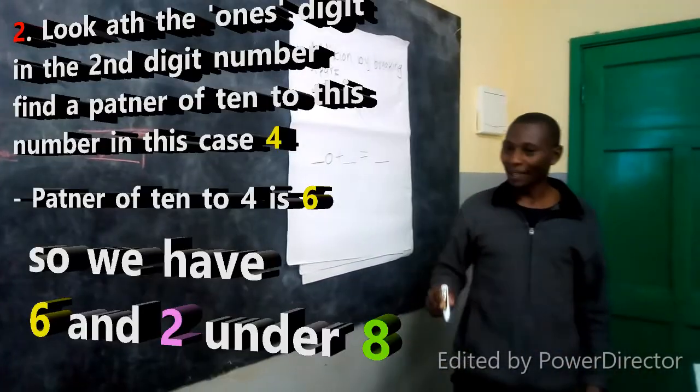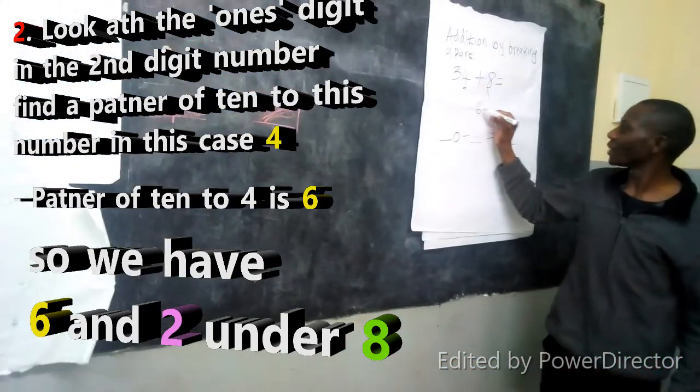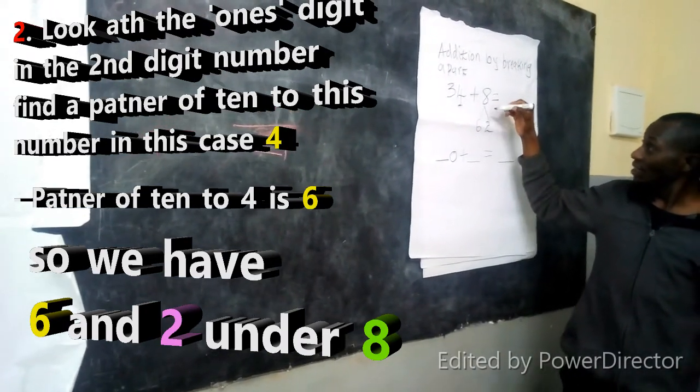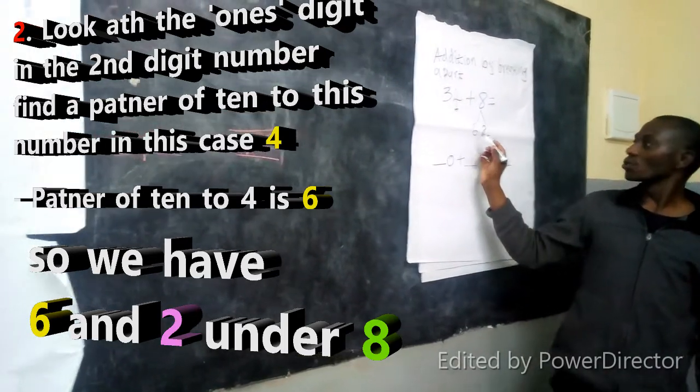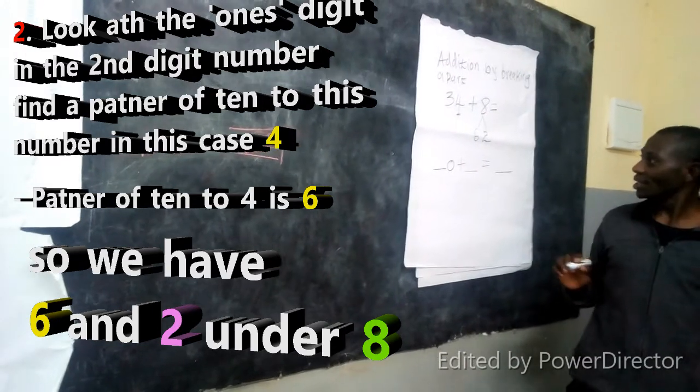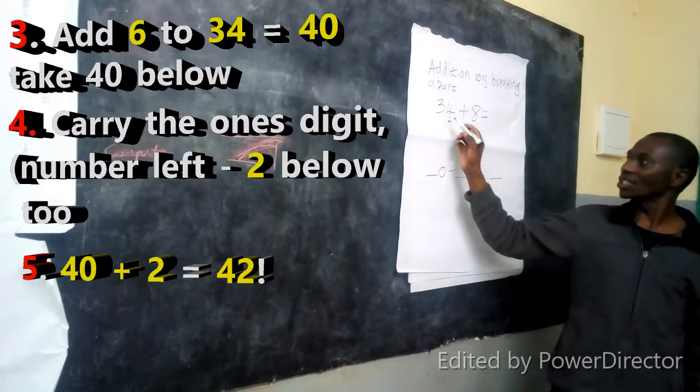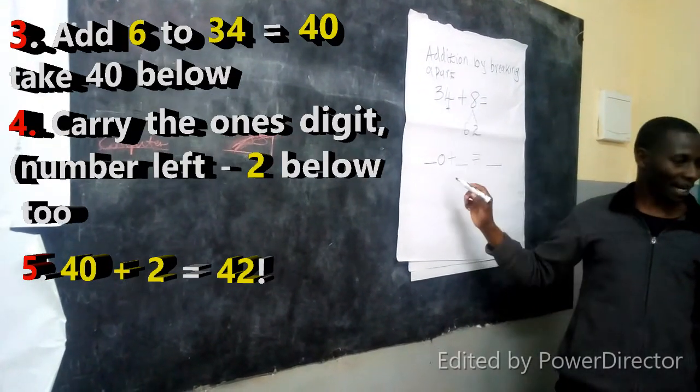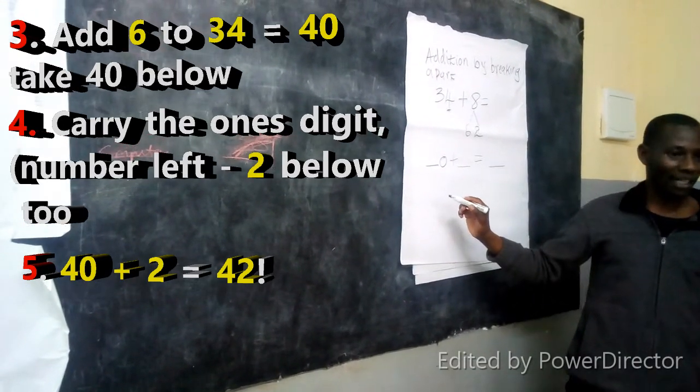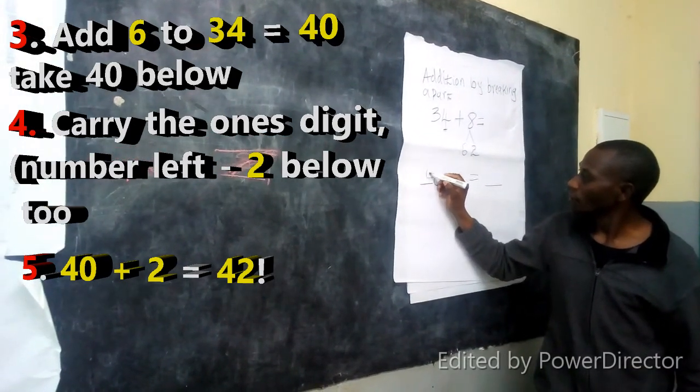Which number is that? Yes? 6. So we shall have 6 and what? 6 and 2. 6 and 2 gives us 8. 6 and 2 gives us what? 8. So the second step, we ask ourselves. If I already have 6 here, alright? Yeah. If I take 6 to this number, what would you like to get? I take 6 to this number, it will give me what? 40. It will give me 40. So I write 40 here.